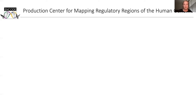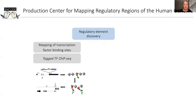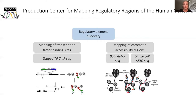We are mainly performing three major assays in our lab. We map the transcription factor binding sites using chromatin immunoprecipitation of tagged transcription factors. We expand the catalog of regulatory elements by analyzing open chromatin regions. Finally, we also map open chromatin regions in single cells from these types of biosamples. We believe that these studies greatly expand the catalog of regulatory regions in the human genome.